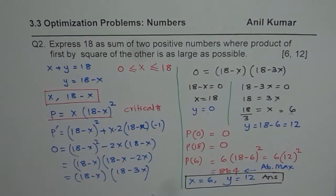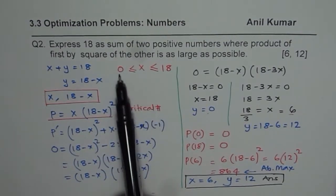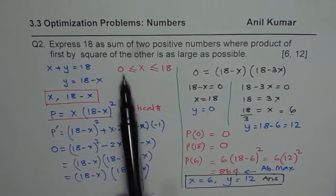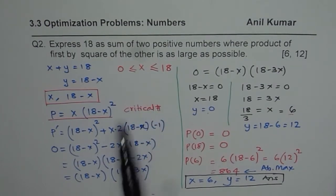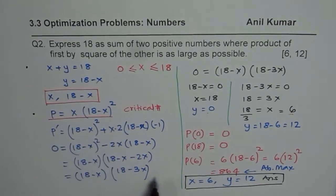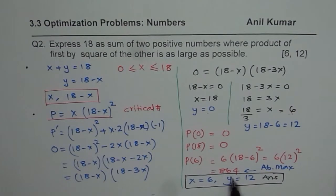Now it is very important in such questions to find the domain of your variable. Since these boundary conditions help us to decide the largest number, first find the domain, also find the critical numbers by equating derivative to 0, and then find their values and compare for the largest. These are the steps involved. Then write down your answer very clearly that the two numbers are 6 and 12. I hope that helps. Thank you.